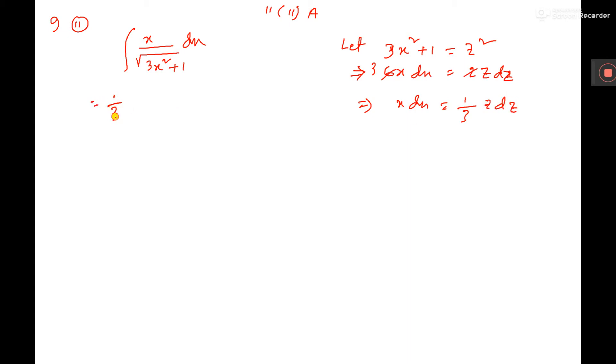So put here 1 by 3z dz and within square root, this is z square means only z, z z cancel.